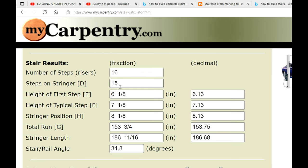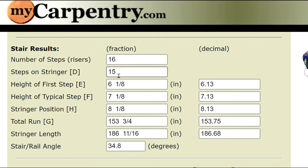The total number of rises is going to be 16. Number of steps on the stringer itself is going to be 15. And the height of the first step is going to be 6 and 1 eighth. Height of the typical step is going to be 7 and 1 eighth. And the stringer position is going to be 8 and 1 eighth.